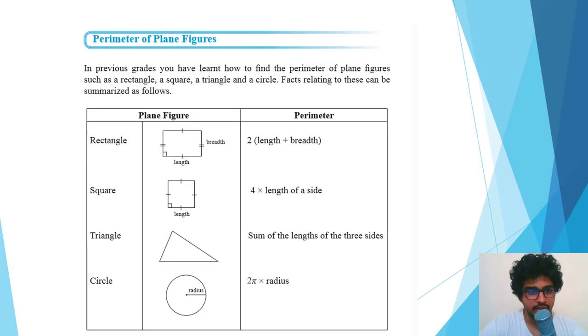The first part of the textbook has given perimeter of plane figures. Before moving on to perimeters of sectors, we have to have a brief idea about perimeter of plane figures. In previous grades you have learned how to find the perimeter of plane figures such as rectangle, square, triangle, and circle.